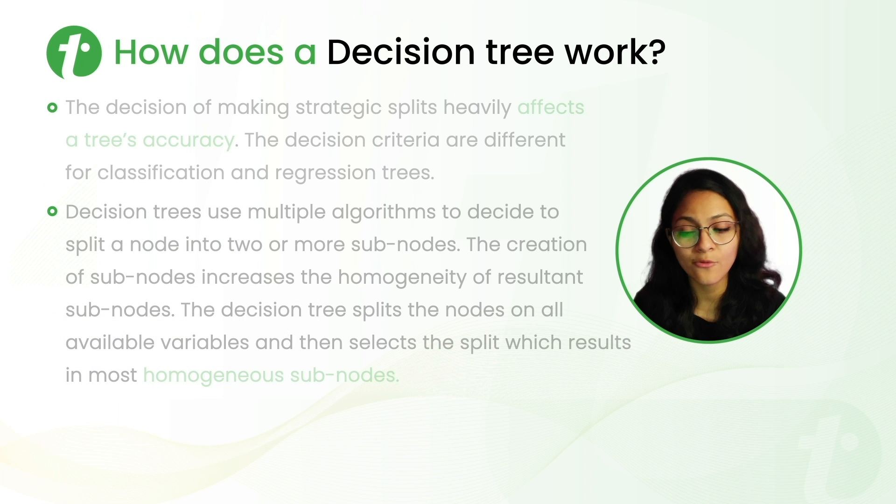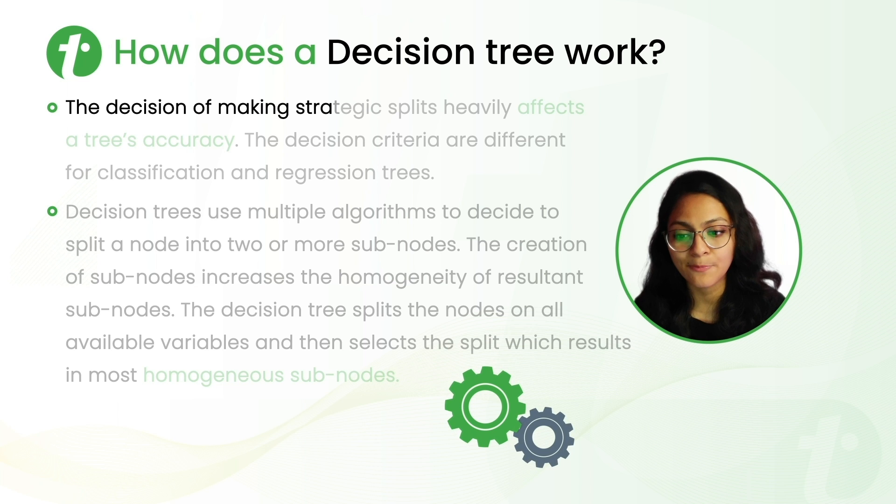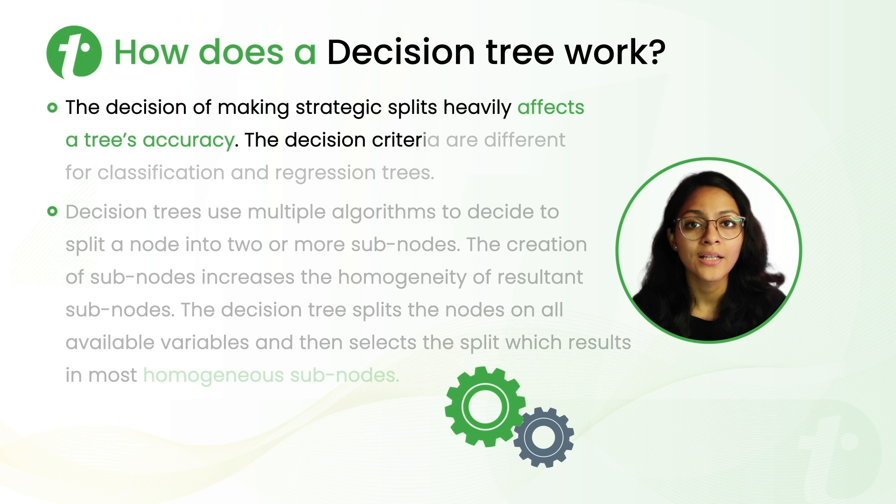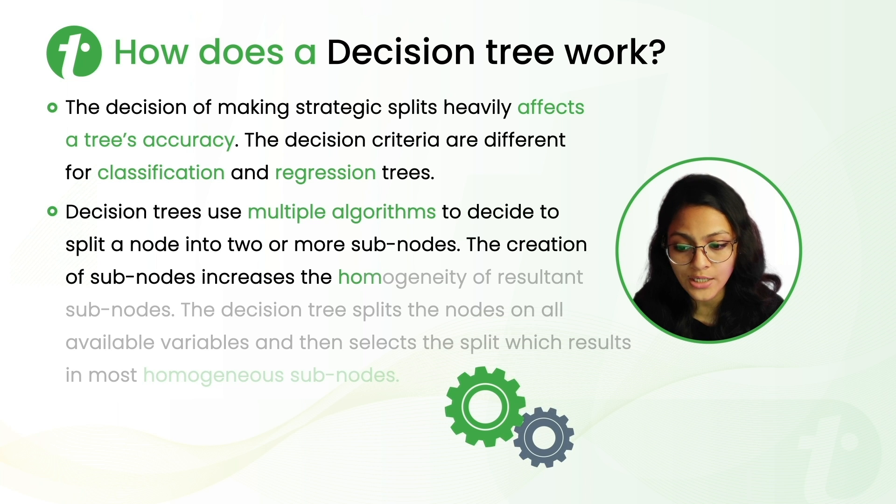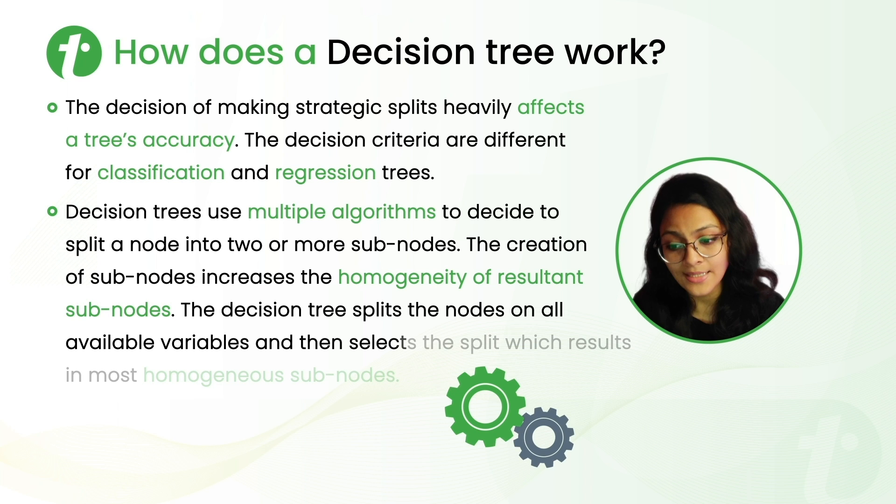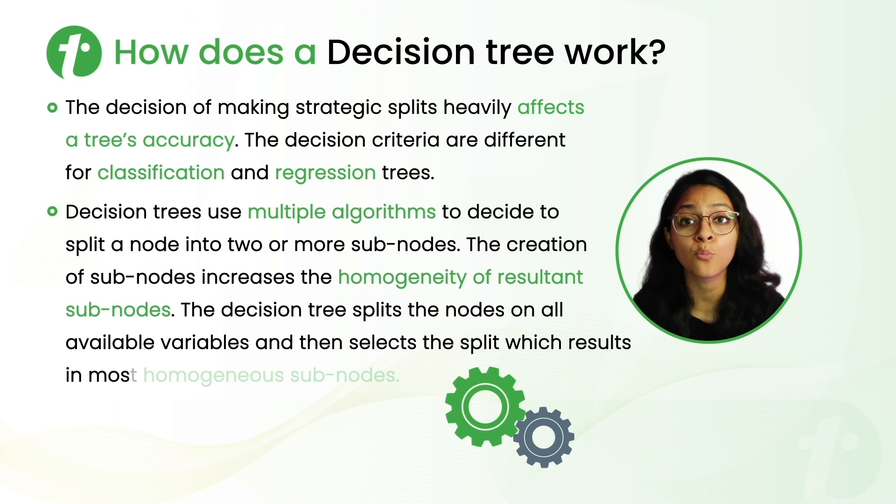Now, let's understand how does a decision tree work. The decision of making strategic splits heavily affects a tree's accuracy. And also, the decision criteria for regression and classification are different. Decision tree uses multiple algorithms to decide to split nodes into two or more subnodes. And the creation of subnodes increases the homogeneity of the resulting subnodes. Or in other words, we can say that the purity of nodes increases with respect to the target variables. The decision tree splits the nodes on all available variables and then selects the split which results in most homogeneous node.